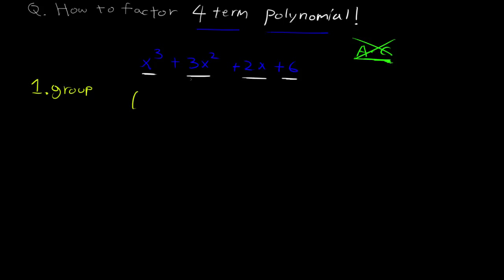We've got to group the first two terms and the last two terms. So we have a group of x cubed plus 3x squared, and we have another group of 2x plus 6.